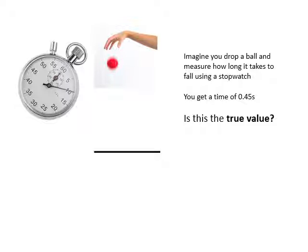The true value is how long it actually took. We have our measurement of 0.45 - that's the measured value. The true value is how long it actually took to fall. Is it the true value? I doubt it very much.